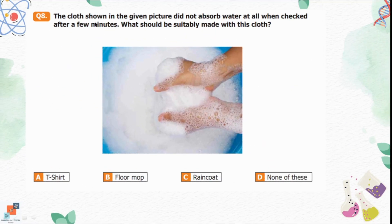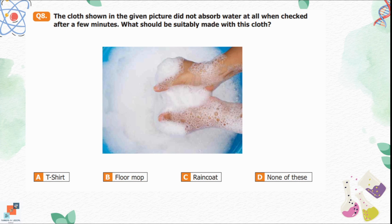Question number 8: The cloth shown in the given picture did not absorb water at all when checked after a few minutes. What should be suitably made with this cloth? Option A is a T-shirt. Option B is a floor mop. Option C is a raincoat. Option D is none of these. The material is non-absorbent, and non-absorbent material is the best material to make a raincoat because a raincoat keeps us dry in the rain. Option C is the correct option.